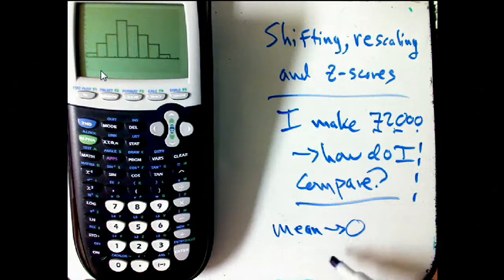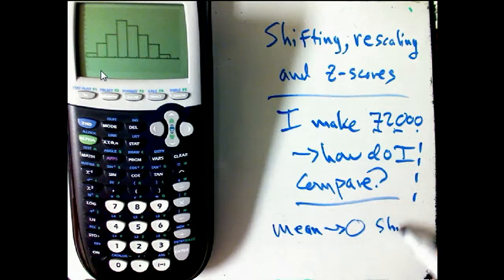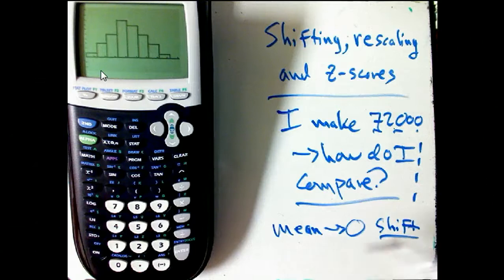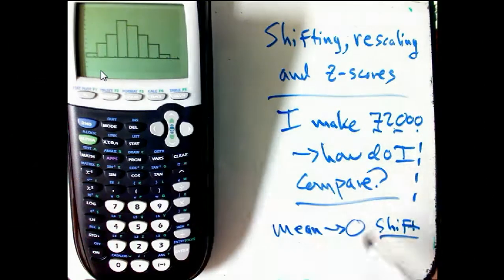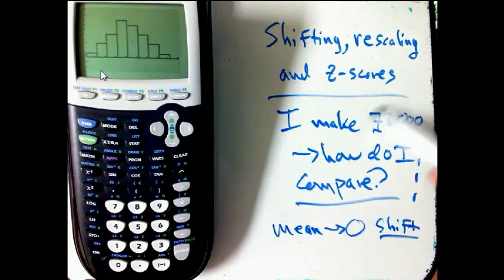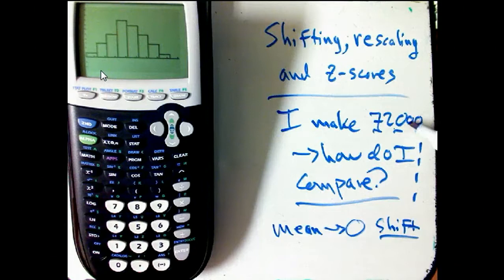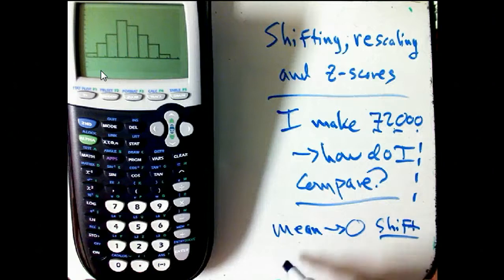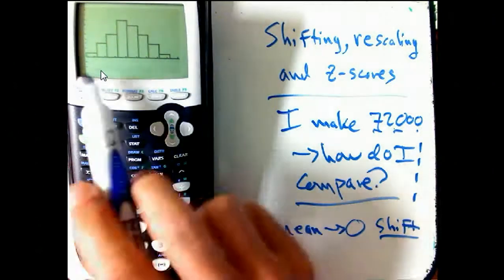So we're going to compare to the mean, and that's going to involve a shift. We're going to take everything and subtract the mean. And then I need to know something about the width. Just shifting isn't enough, because say the mean was $50,000, if all the salaries were between $49,000 and $51,000, this would still be a surprisingly good salary. If the salaries are between $20,000 and $100,000, this isn't so surprising.